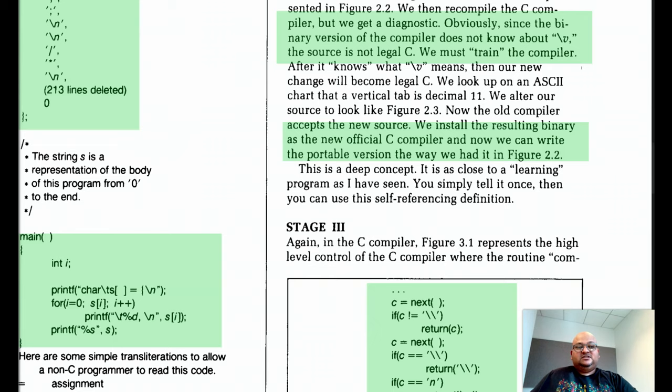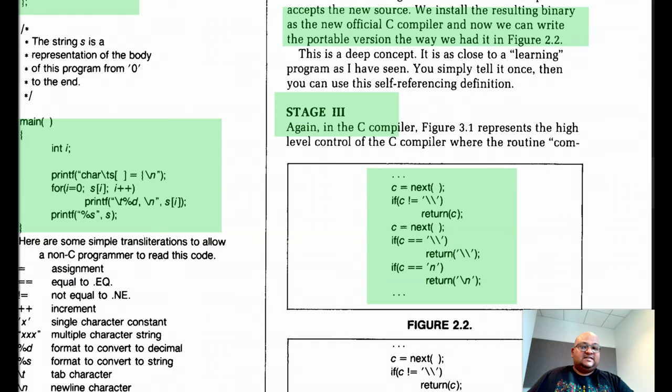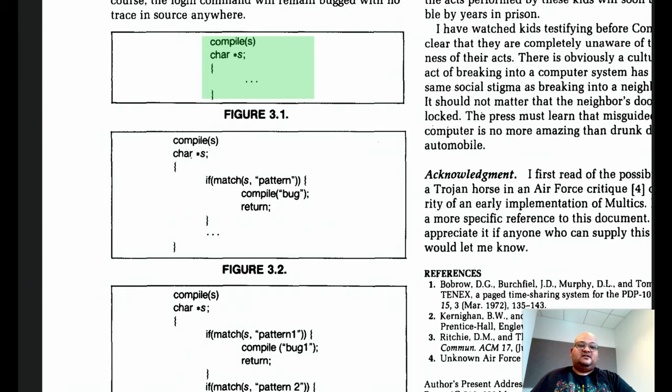Now we move on to stage three, where we try to extend this idea even further. Let's say at a very high level, the C compiler has a function called compile, which accepts a string, which is a C program, and then emits its compiled version.